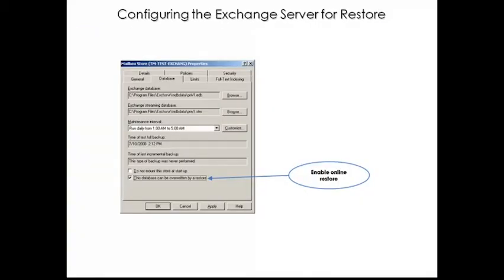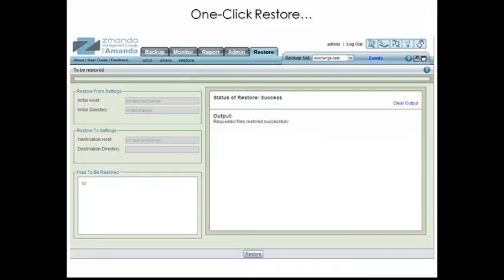When performing an in-place restore, you will also need to configure your Exchange Server database to allow recovery. To do this, open the System Manager in Exchange 2003 or the Exchange Management Console in Exchange 2008, and navigate to the mailbox stores for the server you are restoring to. For each database you plan to restore, make sure that the box labeled 'This database can be overwritten by restore' option is checked. Once you have selected the databases and/or transaction logs you wish to restore and, if necessary, prepared the Exchange Server databases, then you are ready to initiate the restore process.